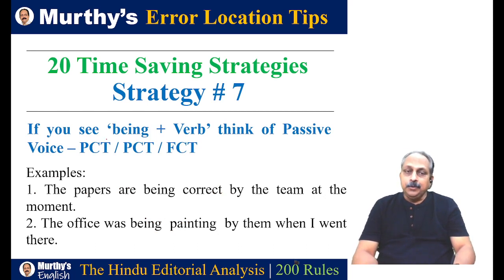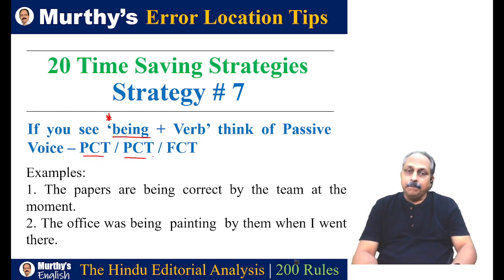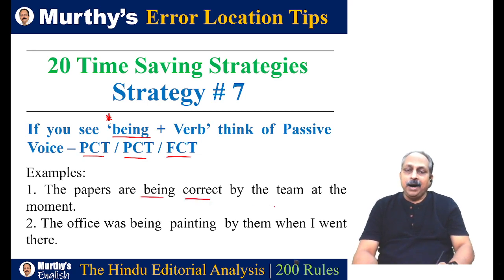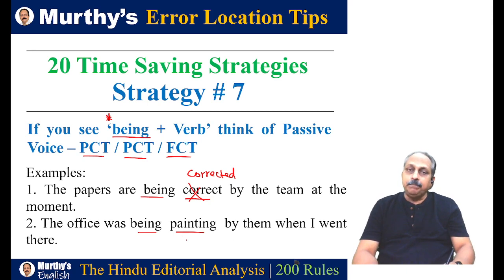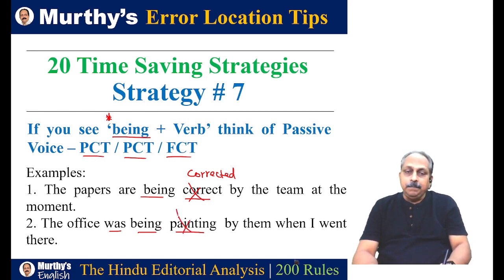Strategy seven: if you see 'being' plus a verb, think of passive voice in continuous tenses — present continuous, past continuous, or future continuous. In passive voice with 'being,' the verb should always be in past participle form. Example: 'The papers are being correct by the team at the moment' — should be 'corrected.' Another: 'The office was being painting by them when I went there' — the verb should be past participle: 'The office was being painted by them when I went there.'